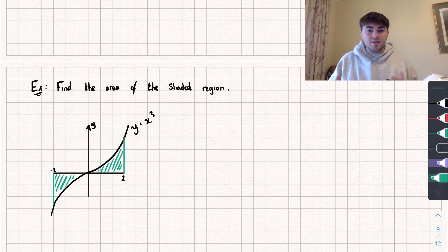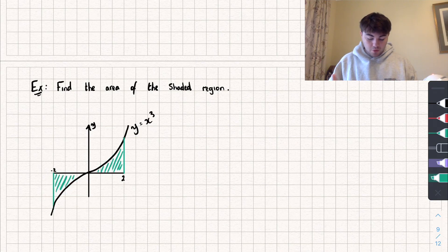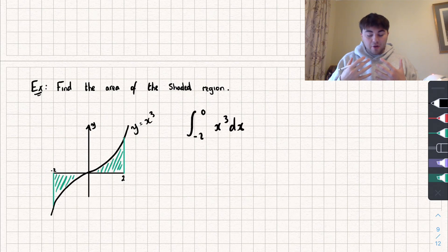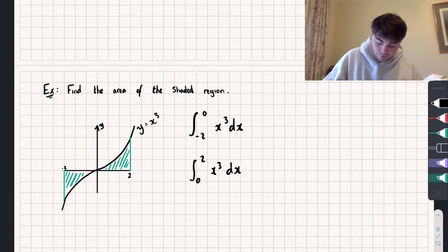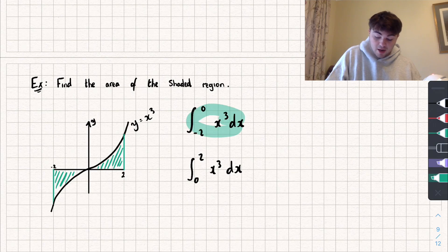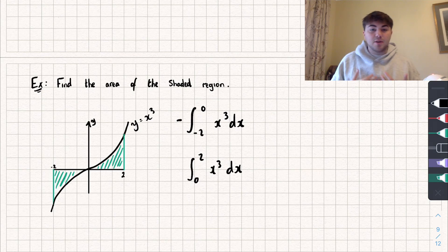So the way we handle this is to split our integral up into two parts: the part of the curve that is below the x-axis and the part that is above it, then add these two parts together. Because the below-axis part will come out negative, we put a negative sign in front of that integral to flip it into a positive number.